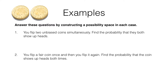In question one it says you flip two unbiased coins simultaneously. Find the probability that they both show up heads. What we can do first is list out the possibility space or sample space for each coin. Now each coin has two possible outcomes — heads and tails, which I will abbreviate using H and T.